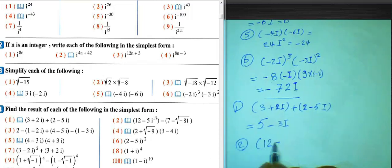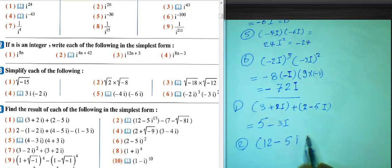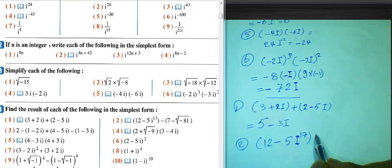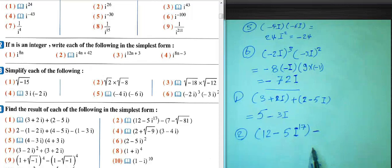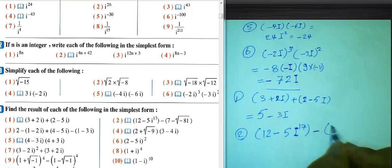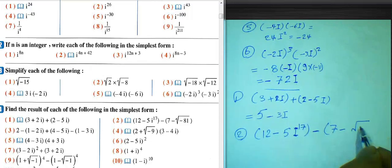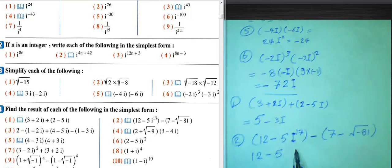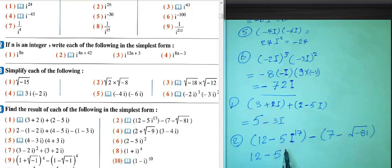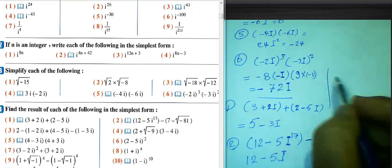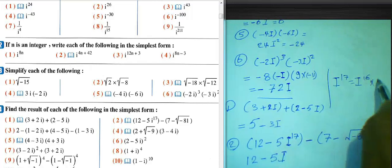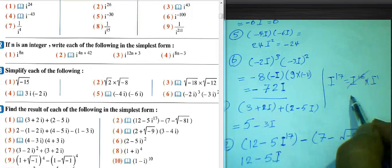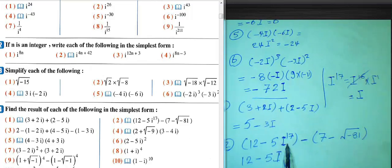Number 2: 12 minus 5i^17, minus (7 minus √(-81)). First: i^17 equals i^16 times i^1; i^16 equals 1, so i^17 equals i. For √(-81): √(-1) equals i, and √81 equals 9, so √(-81) equals 9i. We now have: 12 minus 5i minus 7 plus 9i. Combining: 12 minus 7 equals 5, and negative 5i plus 9i equals 4i. The result is 5 plus 4i.